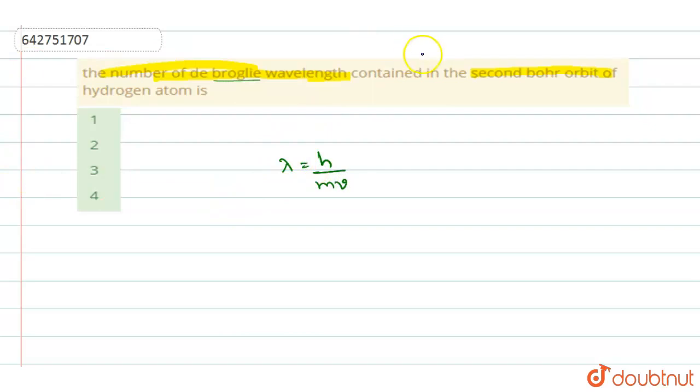Now when talking about the second Bohr orbit, we use Bohr's hypothesis or postulates. According to Bohr's postulates, angular momentum mvr equals the integral multiple of h by 2π. You will take it as nh by 2π. This is the condition according to Bohr's postulate.